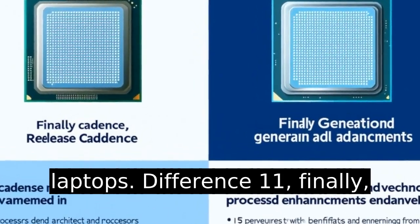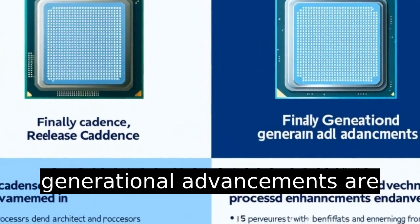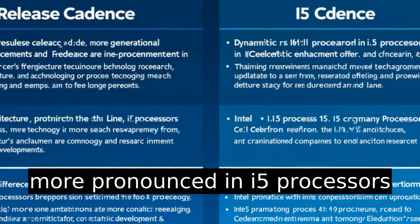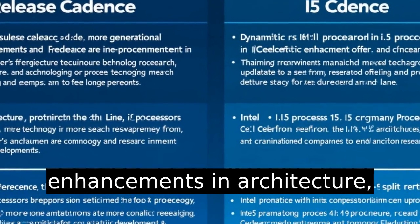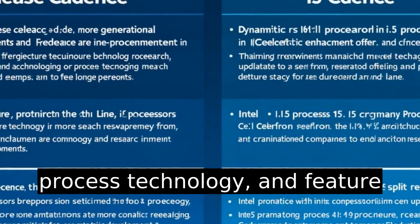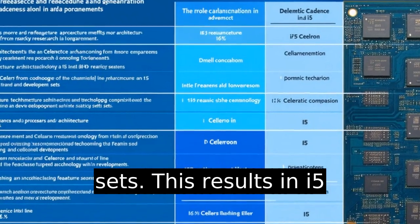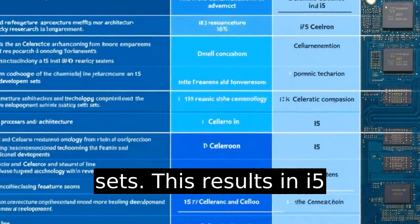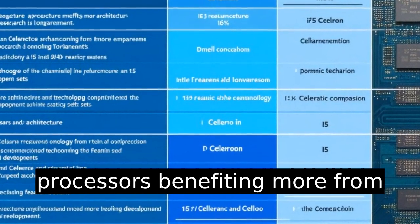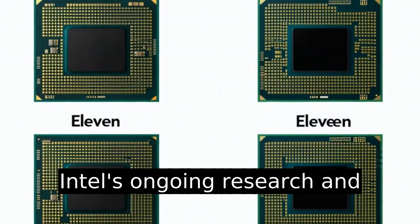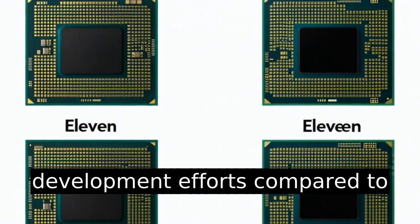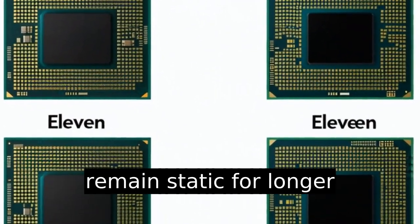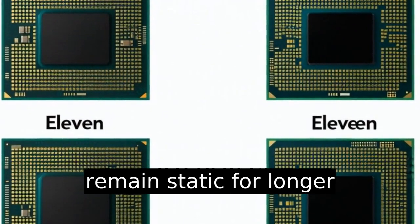Difference eleven: the release cadence and generational advancements are more pronounced in i5 processors, with more frequent updates and enhancements in architecture, process technology, and feature sets. This results in i5 processors benefiting more from Intel's ongoing research and development efforts compared to the Celeron line, which tends to remain static for longer periods.